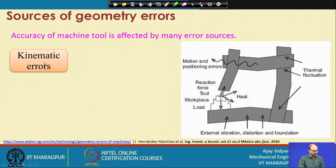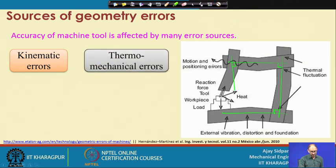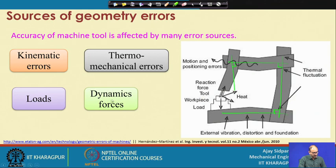The sources of errors are: first, kinematic errors - meaning your axes are not right angles to each other. Second, thermomechanical errors from temperature effects due to climate conditions and machining operation. Third, loads - both stationary loads and dynamic loads from machining forces which affect the spindle system and other structural components. Dynamic forces are reaction forces that occur during machining operation when the machine is running.